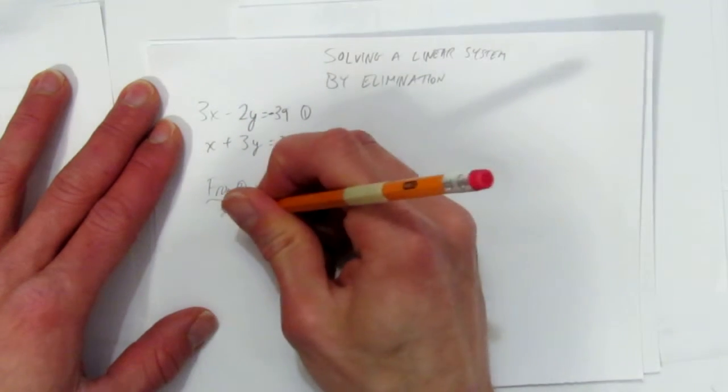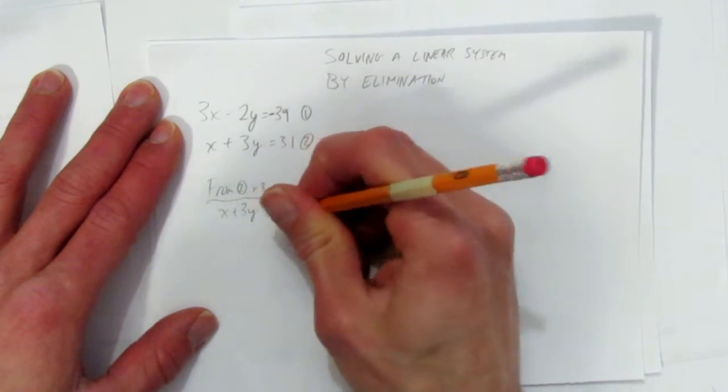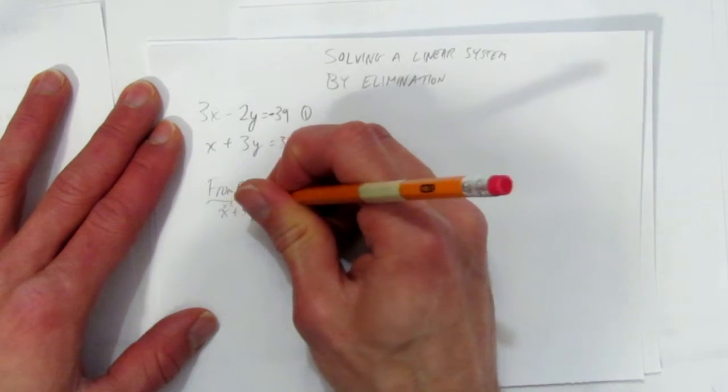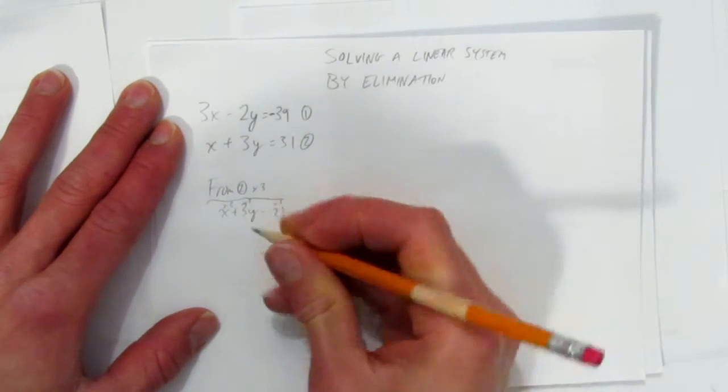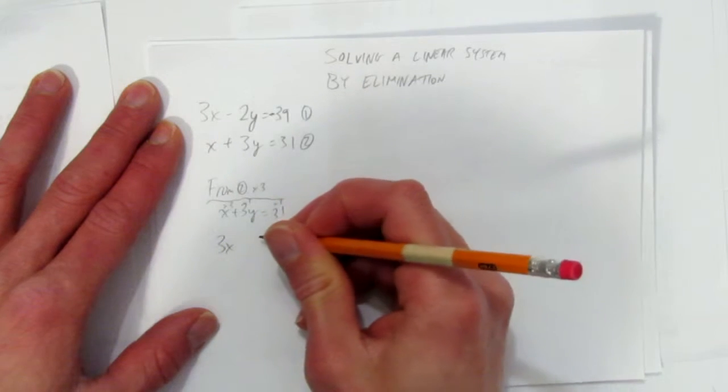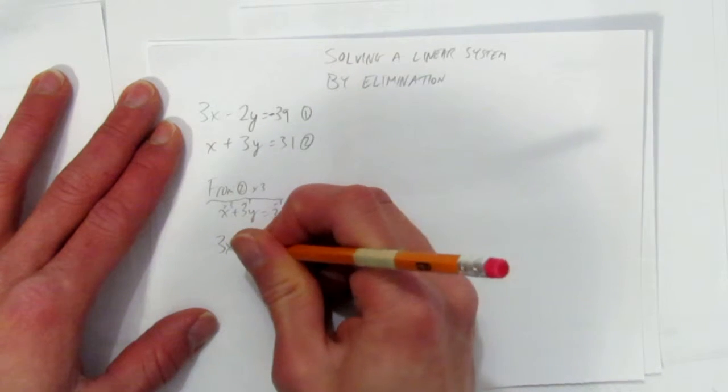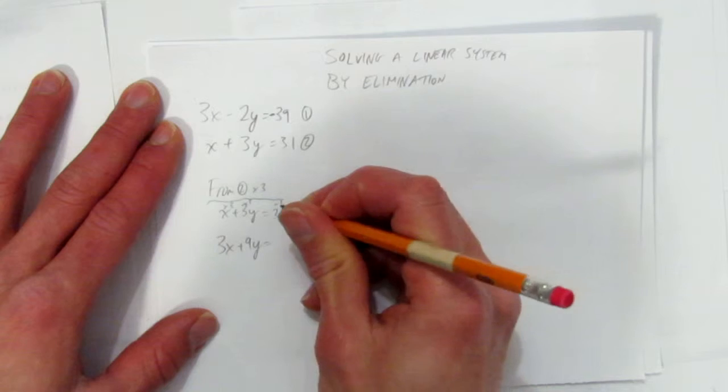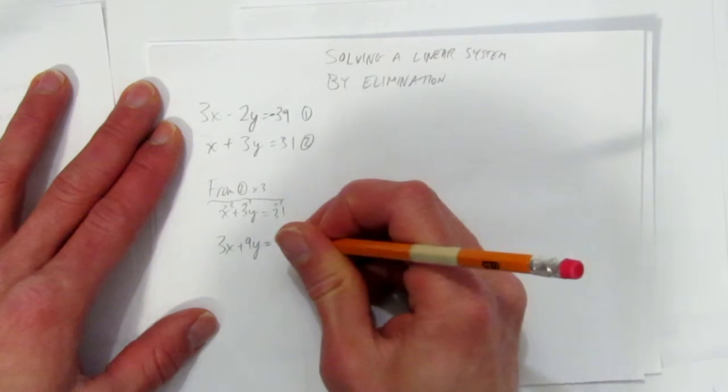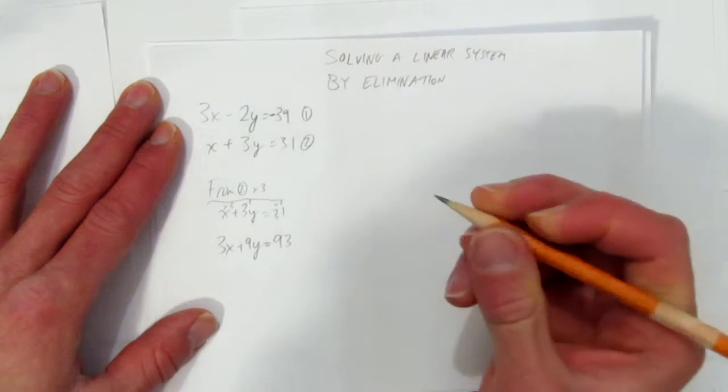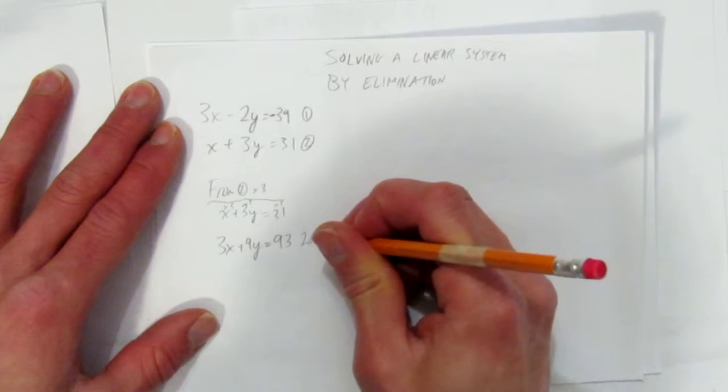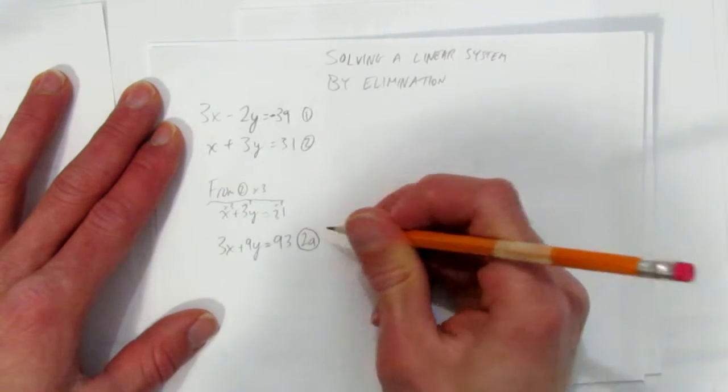So here's equation 2, and I times everything by 3 as I said. So I get 3x, and 3 times 3 is 9y. 3 times 31, you can use a calculator if you want, you get 93. So this is still equation 2, but we'll call it 2a because it's been adjusted.